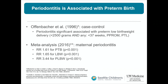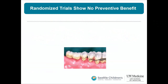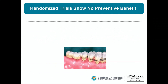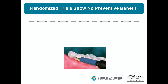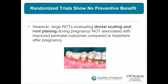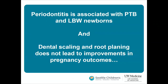A natural question becomes: does treatment of periodontitis during pregnancy actually prevent preterm birth? Over 11 randomized controlled trials have looked at this exact question. The traditional treatment — dental scaling and root planing — involves using a pick to remove plaque. It's pro-inflammatory and causes bacterial seeding, and while no harm was shown, it also didn't prevent preterm birth, though it did improve maternal oral health.